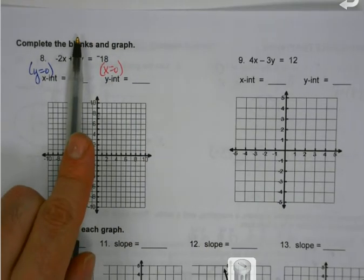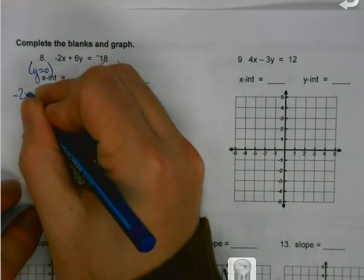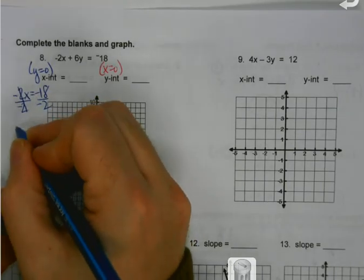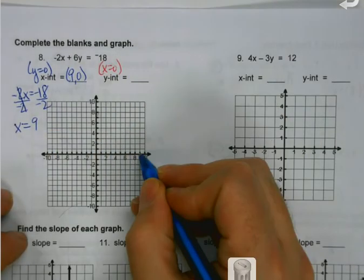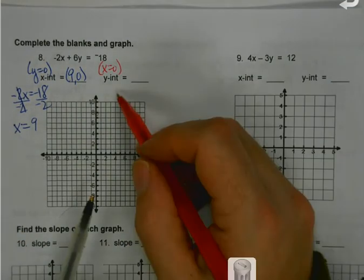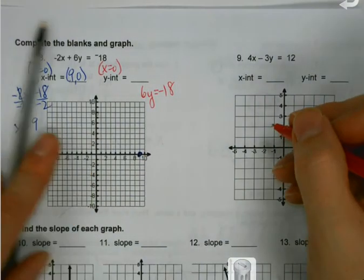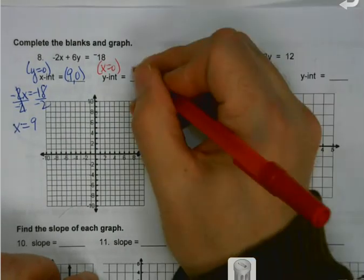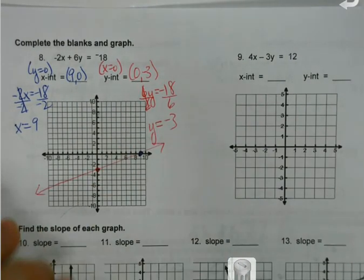When I'm looking for the x-intercept, I pretend y doesn't exist. I just write down the equation left that I see: negative 2x equals negative 18. I solve for x — since I'm multiplying by negative 2, the opposite is to divide by negative 2. A negative divided by a negative gives me a positive. So my x-intercept is at 9, or the point (9, 0). Then I do the exact same thing for my y-intercept, except I cover up the x part. I divide — negative 18 divided by 6 is negative 3. Put my dot in and draw my lines.